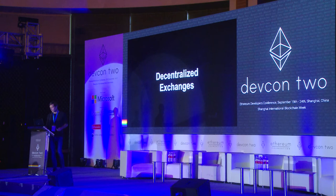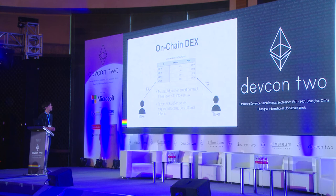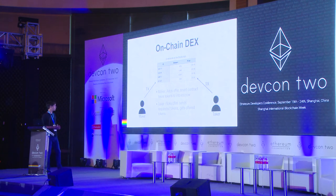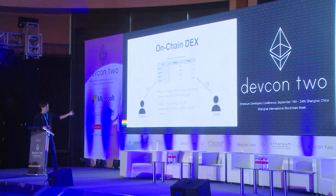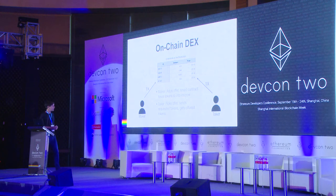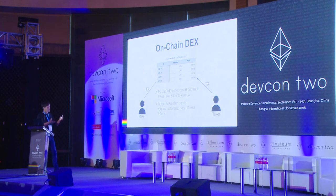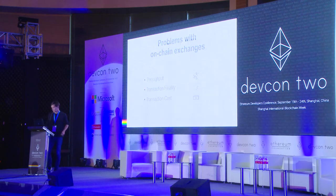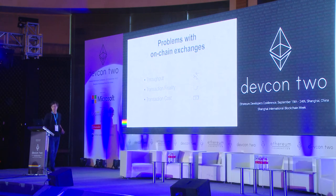Let's look at how decentralized exchanges work on the blockchain currently. Basically it's a smart contract implementing an order book that takes tokens into escrow. If someone wants to sell tokens — we call them the maker — they send those tokens to the smart contract, specify the price, and the smart contract lists the tokens in the order book. If someone likes the offer — the taker — they pick that offer and send the requested tokens to the smart contract, and the smart contract distributes tokens to both parties. The problems are again throughput, finality — you don't want to wait 100 seconds for your trade to confirm — and high transaction costs.